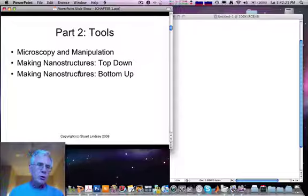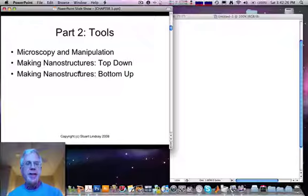In the second part of the book, which I've called Tools, we deal with the techniques that one needs to do things nano. So Chapter 4 is a description of microscopy on the nanoscale, that is visualizing nanostructures, manipulation at the nanoscale, moving single molecules around, interrogating them with scanning probes and optical techniques, and so on.